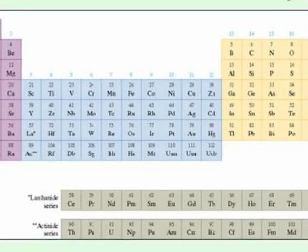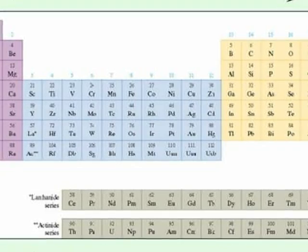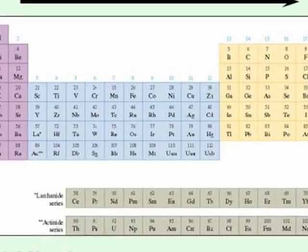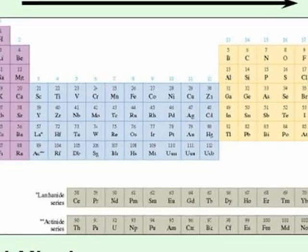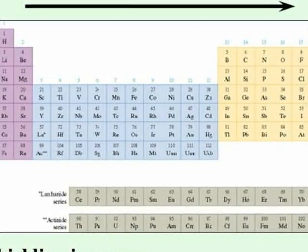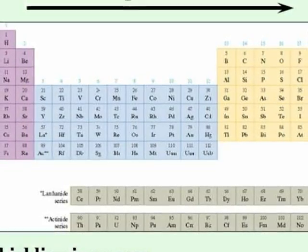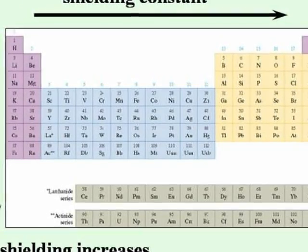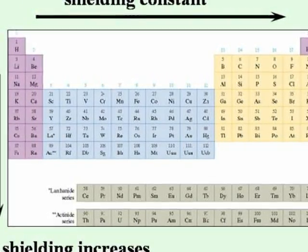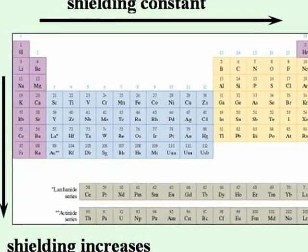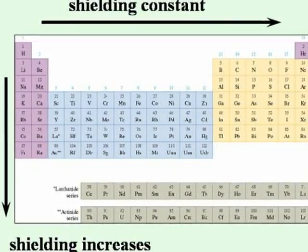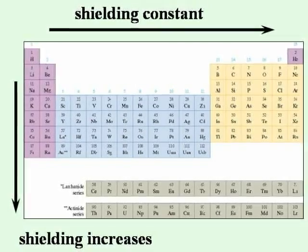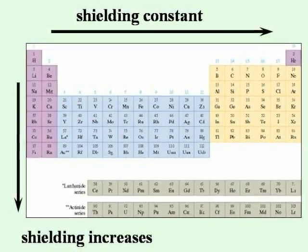As we go down the periodic table, electrons are placed in higher energy levels further away from the nucleus, and those electrons are blocked from the attractive force of the nucleus by the inner electrons. As we move across the periodic table, the electrons are added to the same energy level and do not shield each other from the pull of the nucleus.